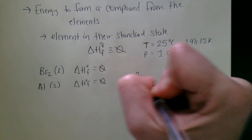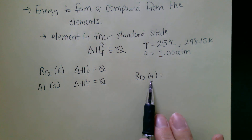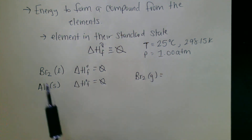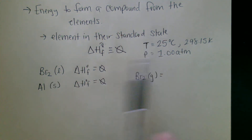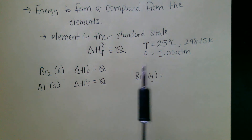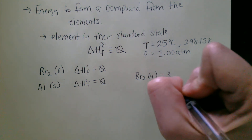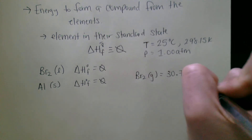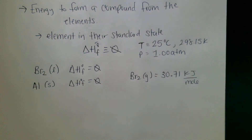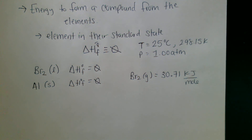But if you don't have the element exactly in its standard conditions — for example, Br2 gas — bromine can enter into the gas phase, but now its enthalpy is not of its standard state. Bromine exists under standard conditions as a liquid, so if we turn it into a gas, its enthalpy of formation is not zero. In fact, for bromine gas it's 30.71 kilojoules per mole.